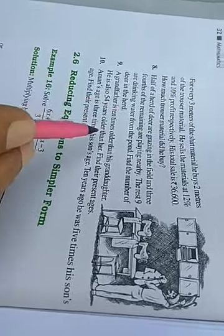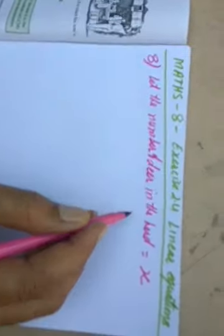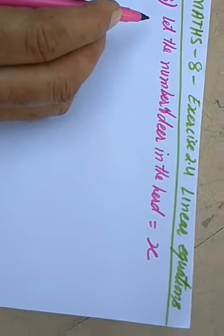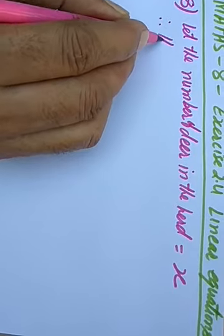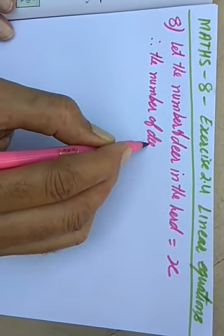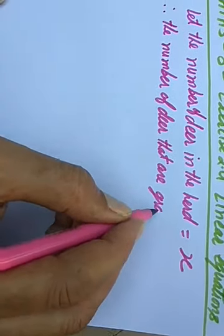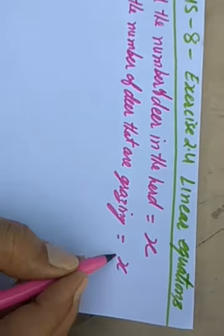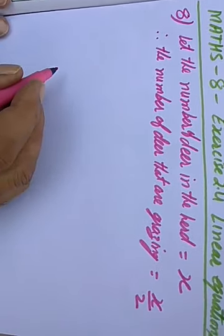Let's suppose that the number of deer in the herd is X. Now, it says half of the herd of deer are grazing. Therefore, the number of deer that are grazing is half of X, which is X upon two. So X upon two is the number of deer grazing in the field.